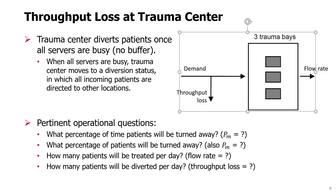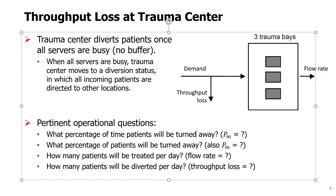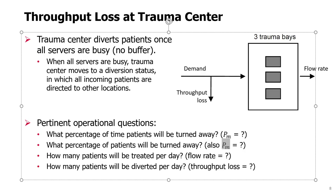The questions we might ask are: what's the percentage of time patients will be turned away? This is a probability we'll call PM, where M is the number of servers. Also, what's the percentage of patients that will be turned away? That is also the same probability PM. How many patients will be treated per day — the flow rate question? And what's the percentage and number of patients diverted per day — the throughput loss?